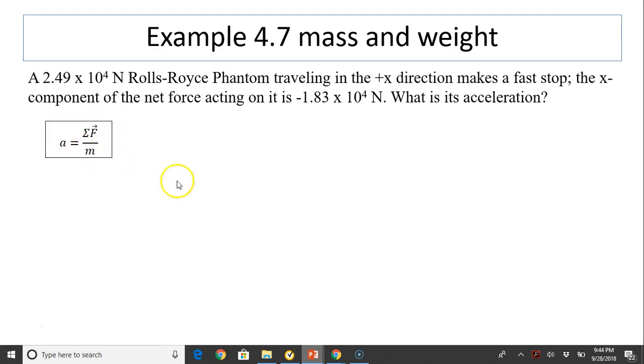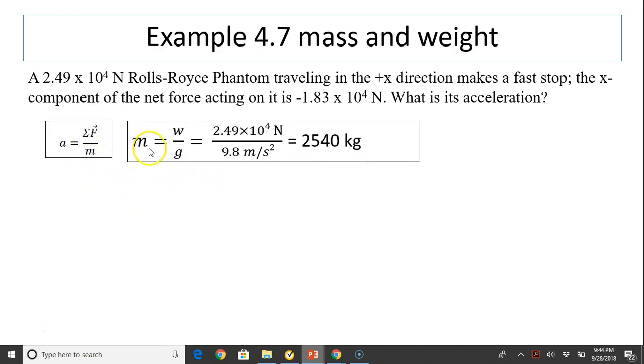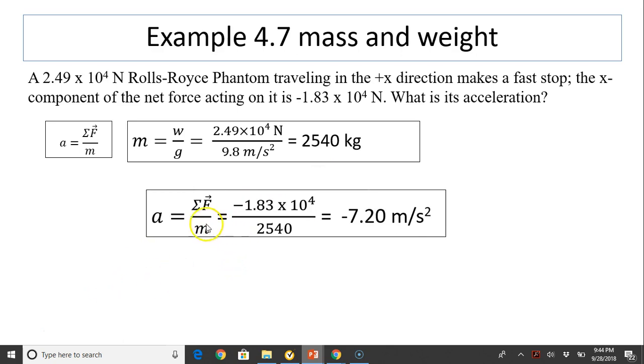So here is acceleration, Newton's second law. And here is the mass and the weight relationship. We can find mass through its weight by using W over g. We have 2,540 kilograms. If we have the mass, we can find acceleration by using net force divided by mass. So we have negative 7.20 meters per second squared.